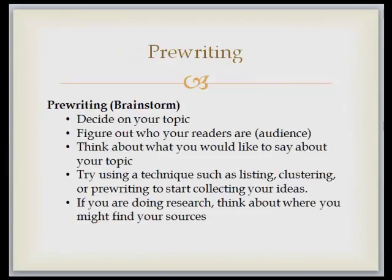The first part, the way we're going to explain it, is pre-writing — and we call this brainstorming. This is where we come up with ideas. The first step in this part of the process is to decide on your topic: decide what you're going to write about. As we go through the class, we're going to talk about different ways you can find those topics — ways to look at your text or what's going on in your life to find things to write about.